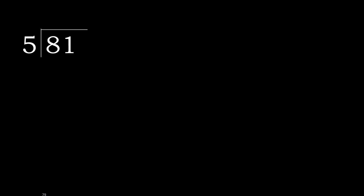81 divided by 5. 8 is not less, therefore work with 8. 5 multiplied by which number is nearest to 8 but not greater? 5 multiplied by 2 is 10, which is greater. 5 multiplied by 1 is 5. 8 minus 5 is 3.